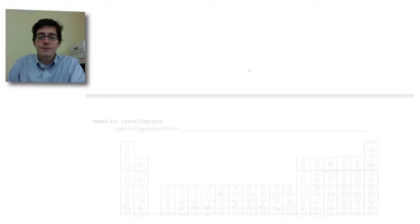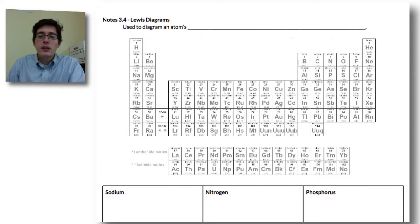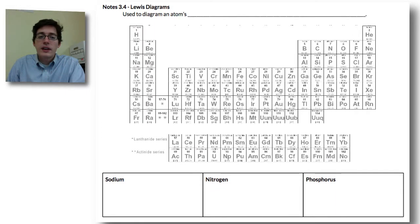So let me just scroll down real quick and we're going to look at the Lewis diagram. The Lewis diagram is used to show an atom's valence electrons.